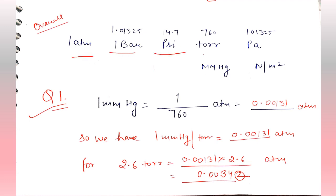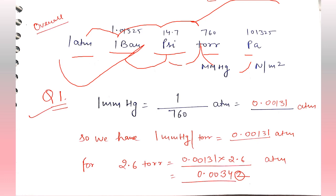In the forward direction we go: atm → bar → psi → torr → pascal. In the backward direction we go: pascal → torr → psi → bar → atm. Now let's look at a unit conversion example.